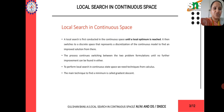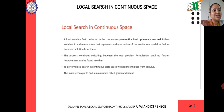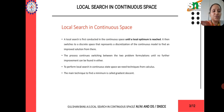Local search is first conducted in the continuous space until a local optimum is reached. That local optimum is the straight line we saw earlier — that is the local optimum value. It is then switched to a discrete space, which represents a discretization of a continuous model, to find an improved solution. If there is any improvisation, you can do it further. The process continues switching between the two problem formulations until no further improvements can be found in the graph.